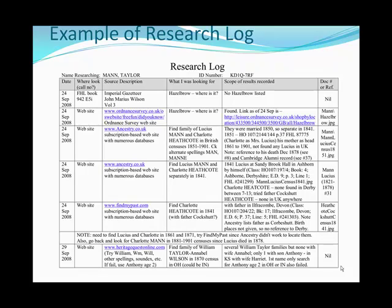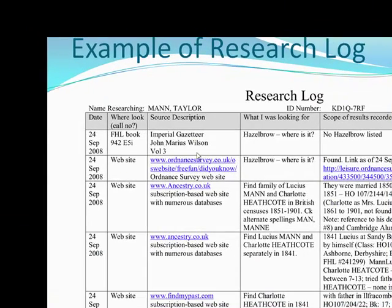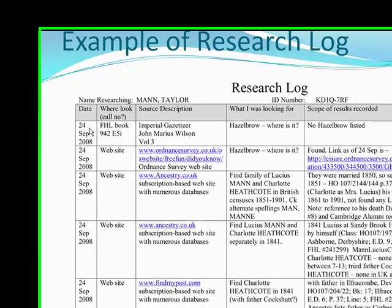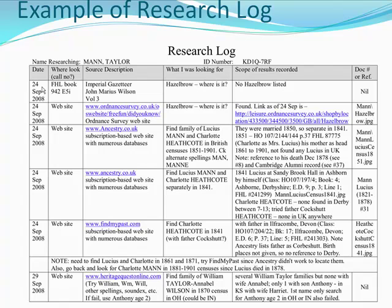Here's an example of a research log, and this came from the FamilySearch Wiki. The name they're researching is Taylor Mann, and they've added the ID number from FamilySearch. On the date, they researched this on September 24th. Here's the call number. The Imperial Gazetteer, Volume 3, is what they looked in. What they were looking for was a town called Hazelbrow. And the results: no Hazelbrow is listed.